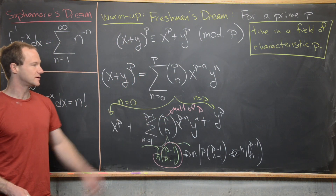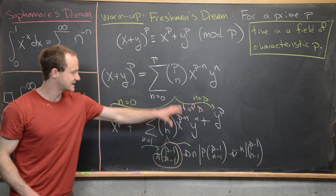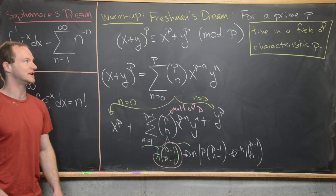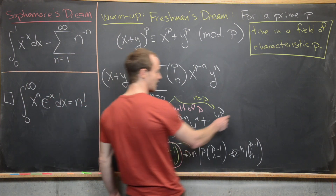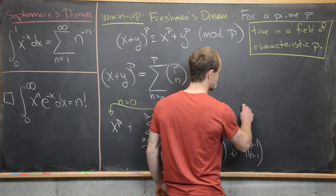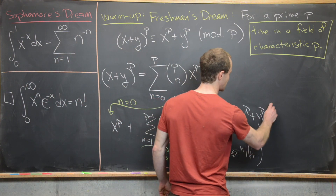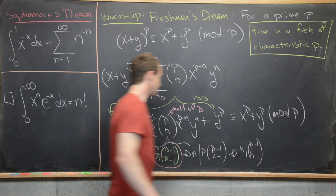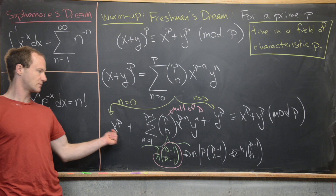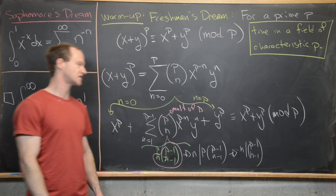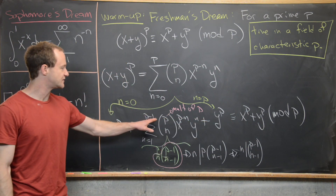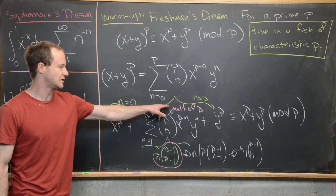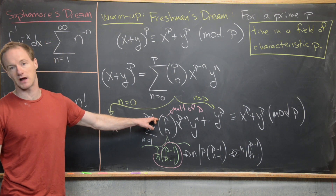Since each term in the middle sum is a multiple of p, the entire middle sum is congruent to 0 mod p. This tells us that the whole expression is congruent to x to the p plus y to the p mod p — because the first term is x to the p, the last term is y to the p, and the middle term is 0 mod p. That completes the proof of the freshman's dream.